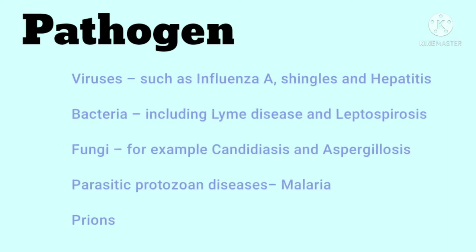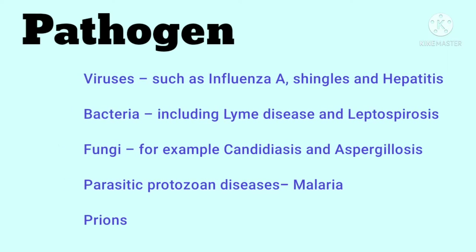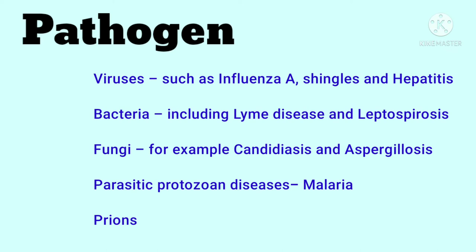As we will talk about the first step: the pathogen. The bacteria or virus causes an infection — this is the pathogen. First phase examples include viruses such as influenza, shingles, hepatitis, and bacteria such as Leptospirosis, Lyme disease, and E. coli. There are also fungi.